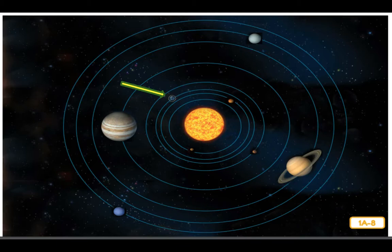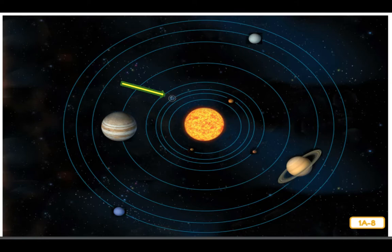Earth is one of the eight major planets that orbits the sun. The other planets are Mercury, Venus, Mars, Jupiter, Saturn, Uranus, and Neptune. Like the other planets in the solar system, earth is trapped in the gravitational pull of the sun, which causes earth to orbit or revolve around the sun. It takes one year — about 365 days — for earth to complete an orbit around the sun.